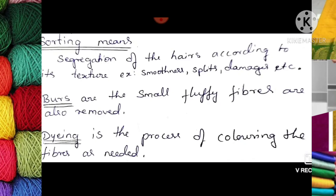Next is sorting of wool — segregation of hairs according to texture such as smoothness, splits, damages. They are separated and kept aside into different types of wool. Some have only smooth fibers and some are rough fibers, so they are separated in the sorting process. Small fluffy fibers called burrs are also removed, otherwise they will create roughness in the wool.